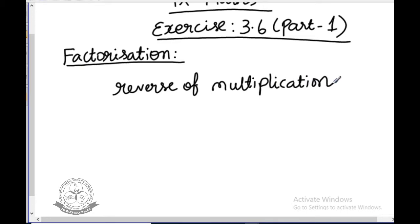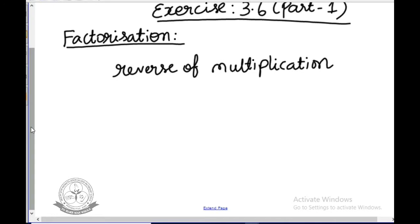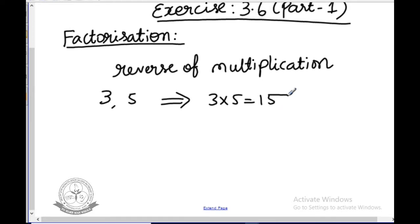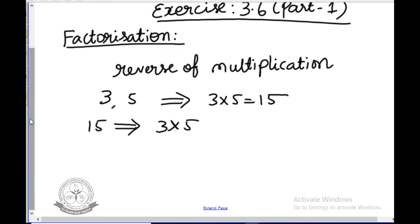For example, taking the numbers 3 and 5, if you multiply 3 into 5, you get 15. This is the product. So if you take the number 15, it can be split into 3 and 5. So 3 and 5 are the factors. The reverse of multiplication is called factorization.